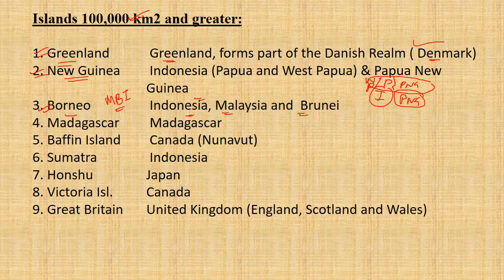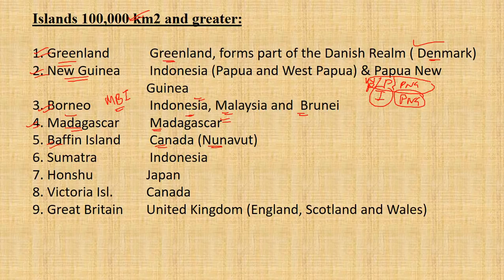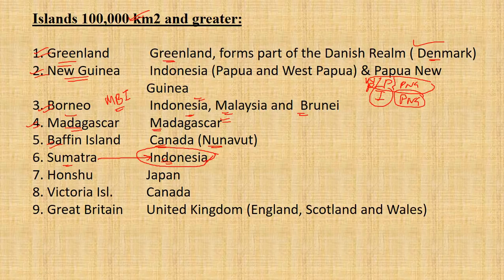The fourth island is Madagascar, which lies on the eastern coast of Africa in the Indian Ocean. Next is Baffin Island, which belongs to the Canadian territory of Nunavut. Then, Sumatra belongs to Indonesia — it is the largest island located entirely within one single country, both in Asia and in the world ranking.